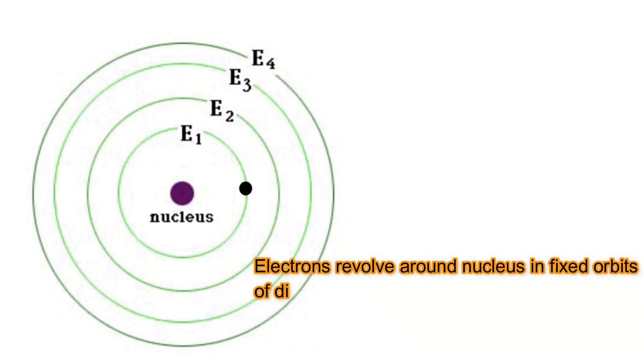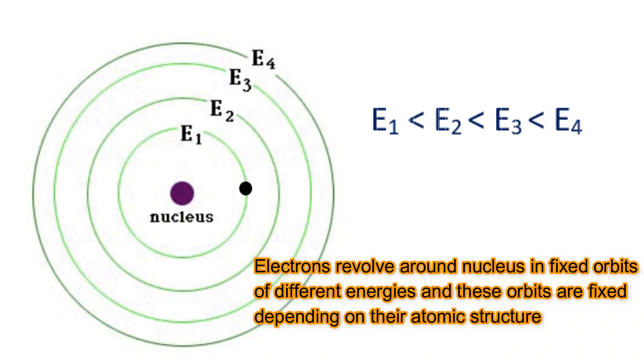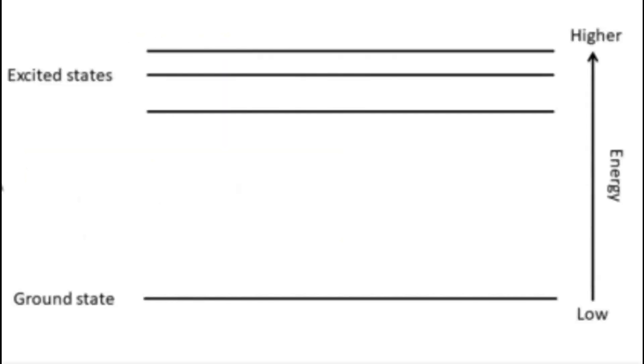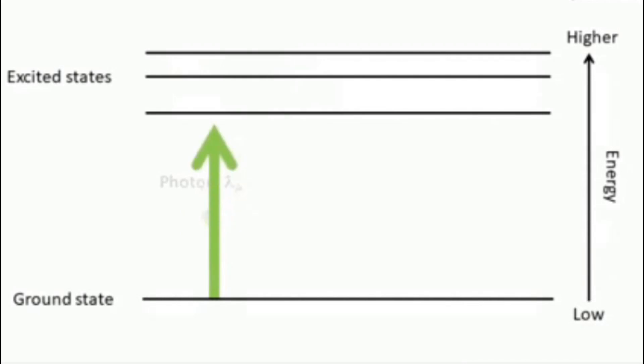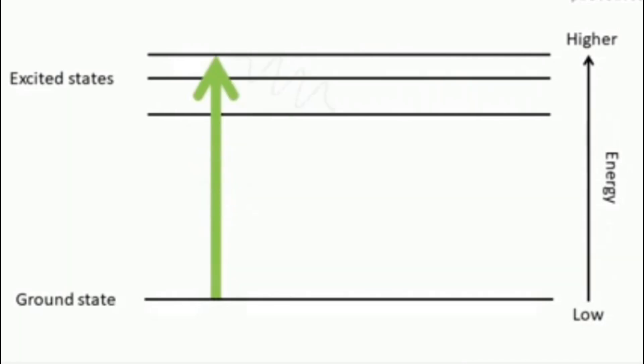And in an atom, electrons revolve around the nucleus in a fixed orbit. And each and every orbit has their own fixed energy levels. When this green laser light is incident here, these atoms absorb those photons and using their energy they reach an excited state from their ground state.